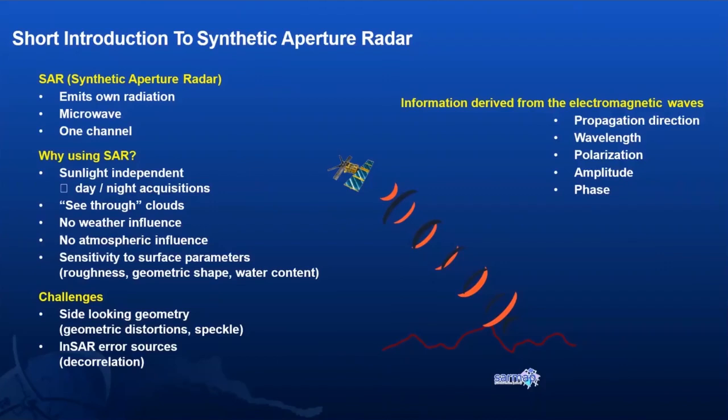The advantages are the information we can derive from electromagnetic phase. This is really helpful in various applications related to agriculture, forestry, water, and urban domains — including amplitude information, phase information, and others. Various polarizations can also be used for specific applications of interest to derive information to the fullest.